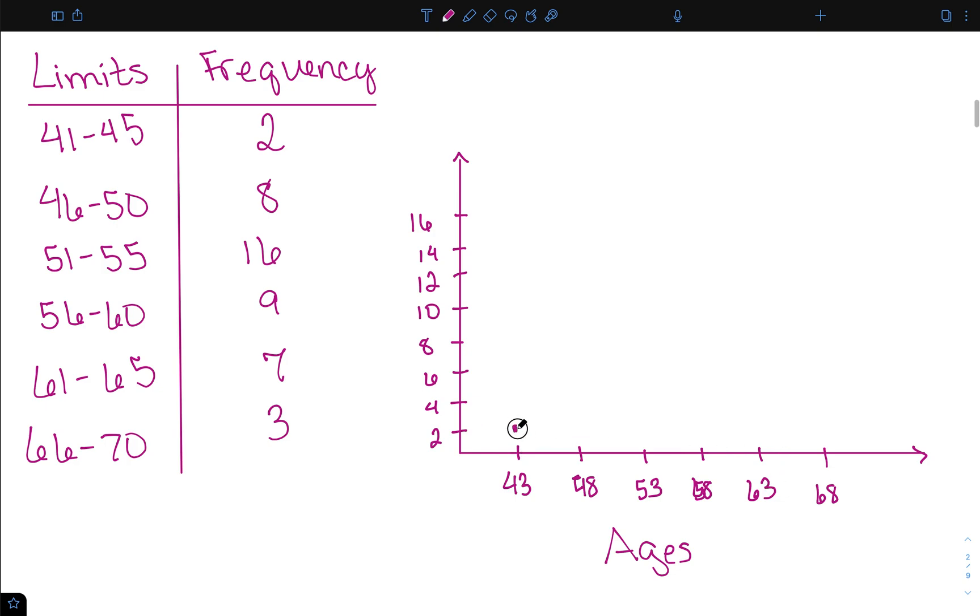The first class has a frequency of two. The second one of eight. We then go up to 16, back down to nine, down to seven, and finally down to three.